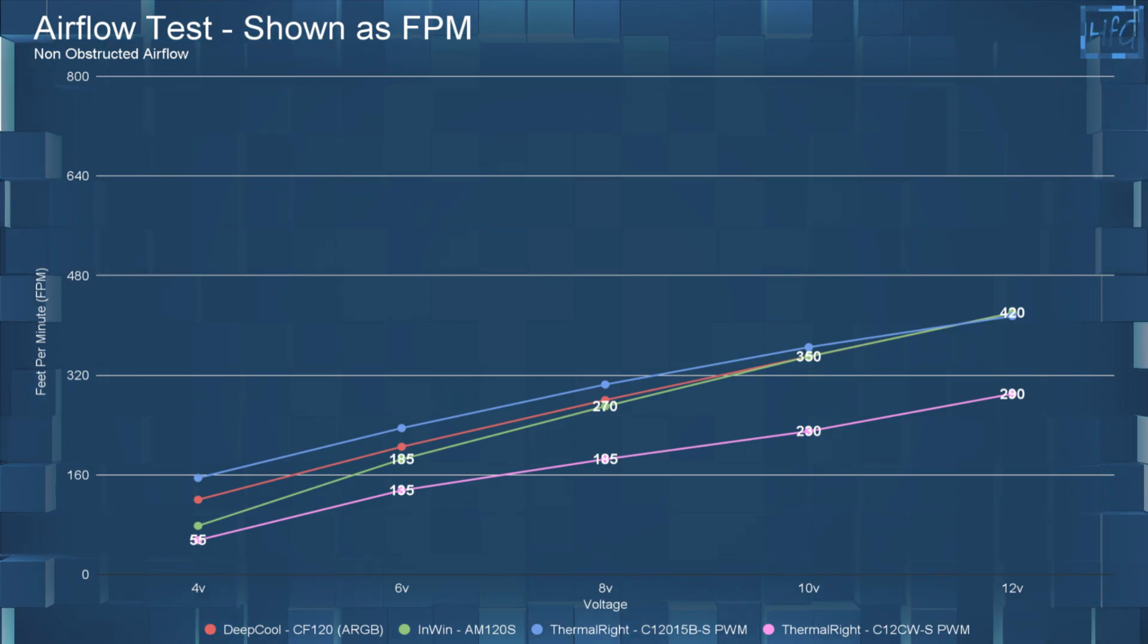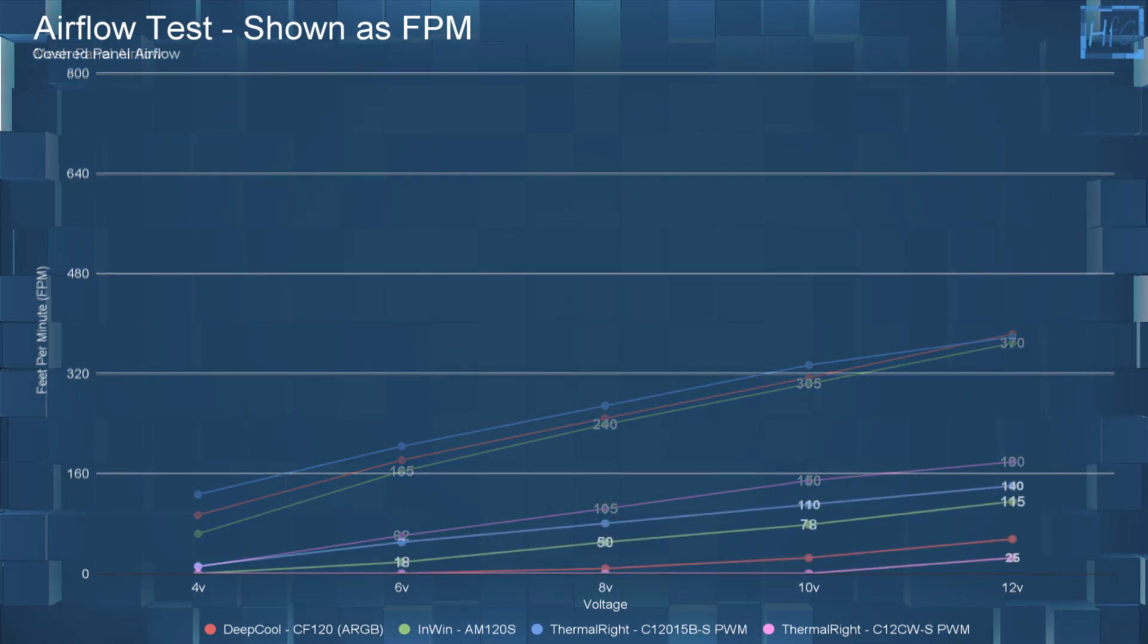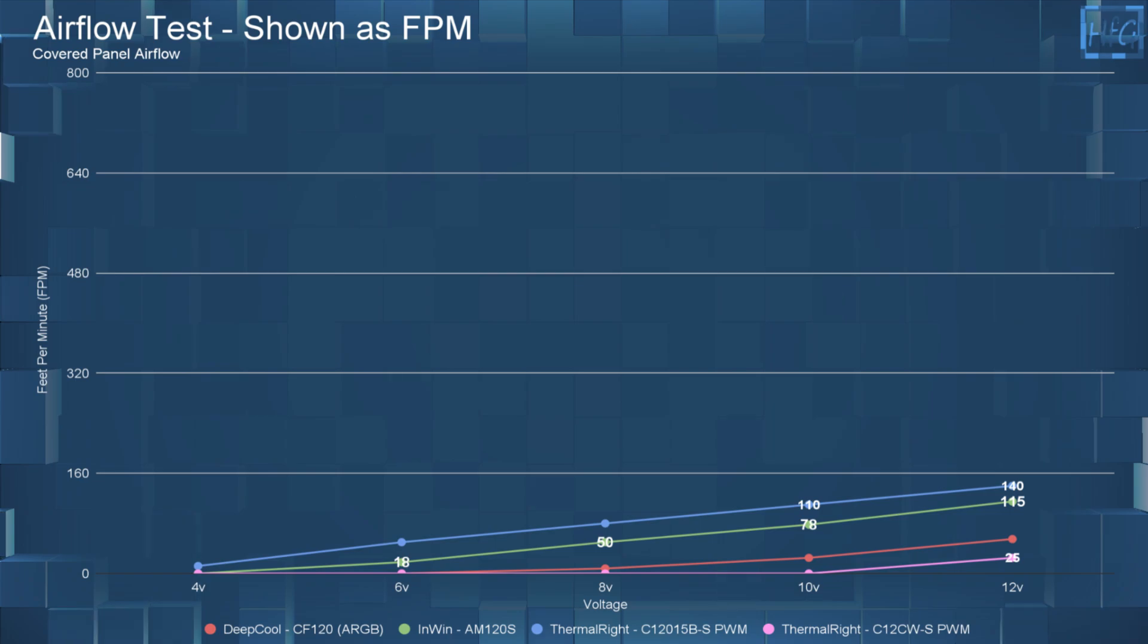Moving on to airflow. So with no obstructions, the CF120, the AM120S, and the C12015 at 8, 10, and 12 volts had very similar FPMs. In the mesh panel testing, things don't really change too much. The airflow of those three fans is still very similar. In the cover panel testing, things do change quite a bit. The AM120S and the C12015 do manage to maintain more airflow than the CF120 does.